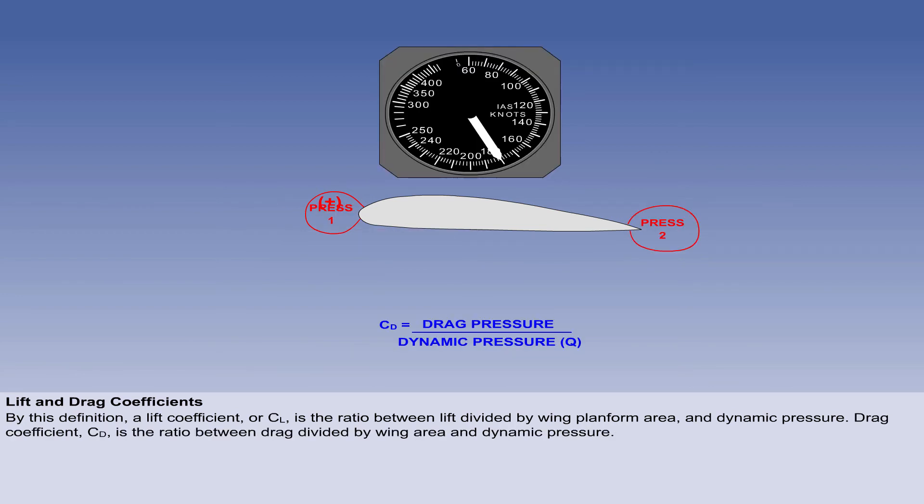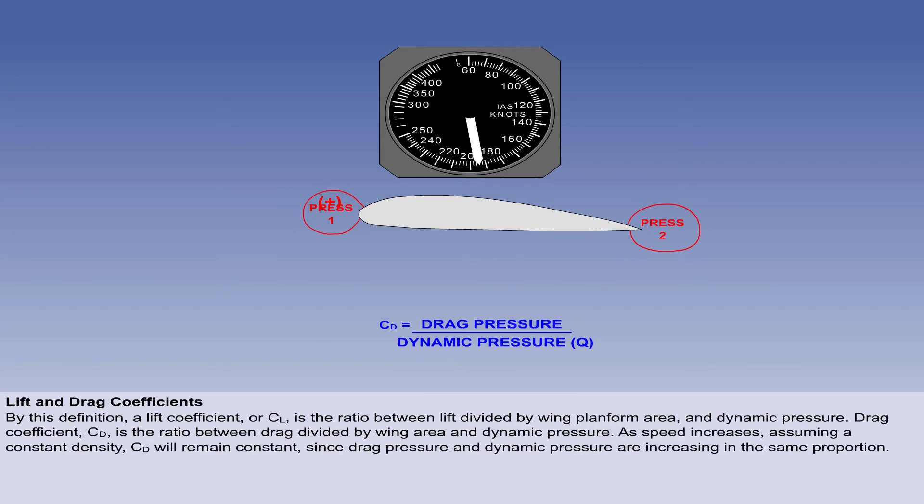A drag coefficient, CD, is the ratio between drag divided by wing area and dynamic pressure. As speed increases, assuming a constant density, CD will remain constant, since drag pressure and dynamic pressure are increasing in the same proportion.